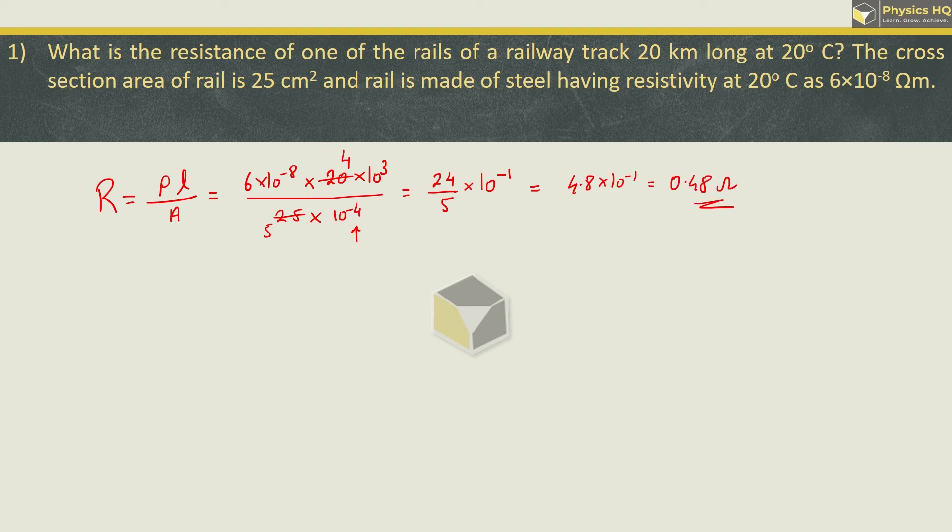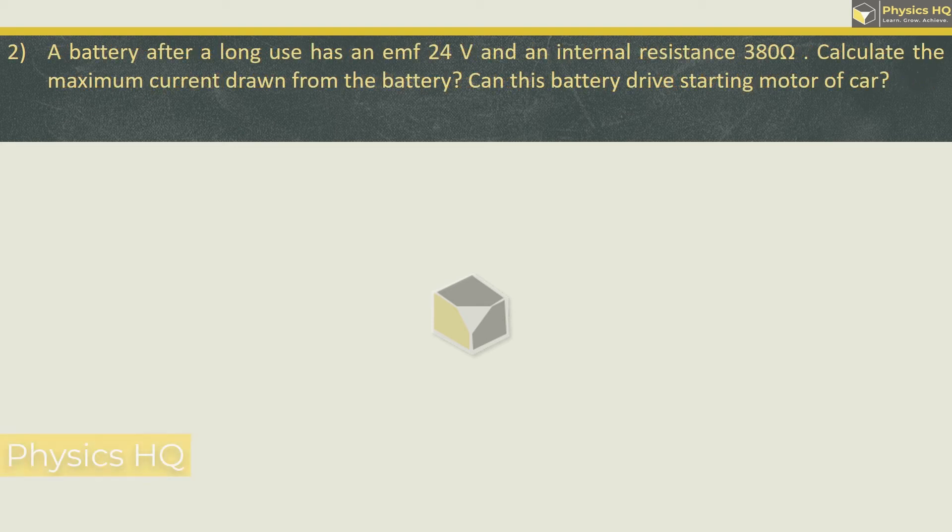Hope you all understood this. Let us check out the next sum. A battery after a long use has an EMF 24V and an internal resistance of 380 ohm. Calculate the maximum current drawn from the battery.